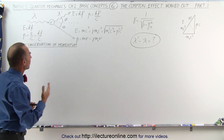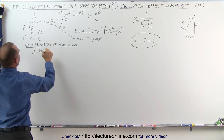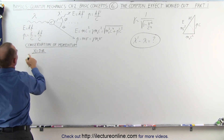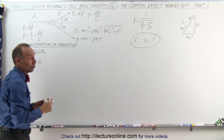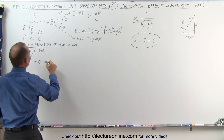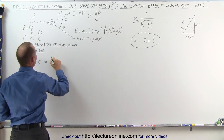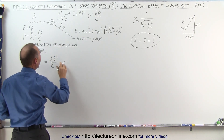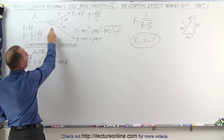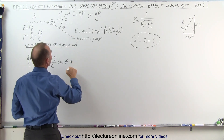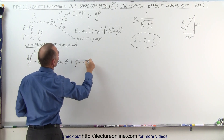We need to solve conservation of momentum in two directions: the x-direction and the y-direction. In the x-direction, the initial momentum is only that of the photon, hf over c, plus the momentum of the electron which is zero before the collision. This equals the momentum afterwards: hf prime over c times the cosine of phi for the photon, plus the momentum of the electron p times the cosine of theta.